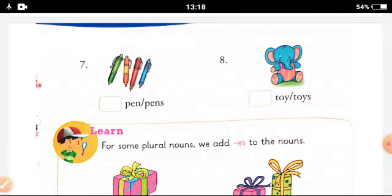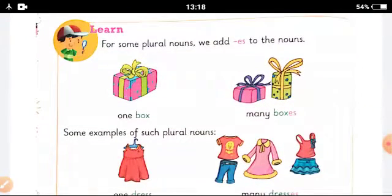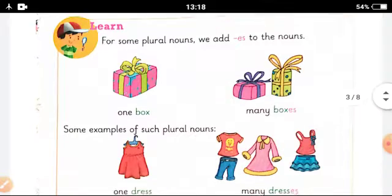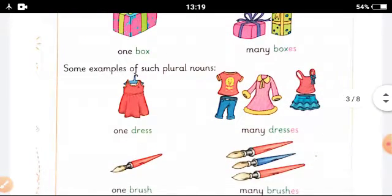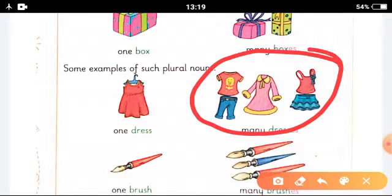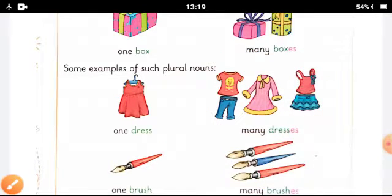Now to learn some plural nouns, we add 'es' to the nouns. See here, in the first there is only one box, so it is box. Now for more than one we write boxes: B-O-X-E-S. Now there is another example. See here, one dress is there children. And in the second picture, how many dresses are there? You can count one, two, three, and four. So see what is written: many dresses, D-R-E-S-S-E-S. Then in the next picture there is one brush.